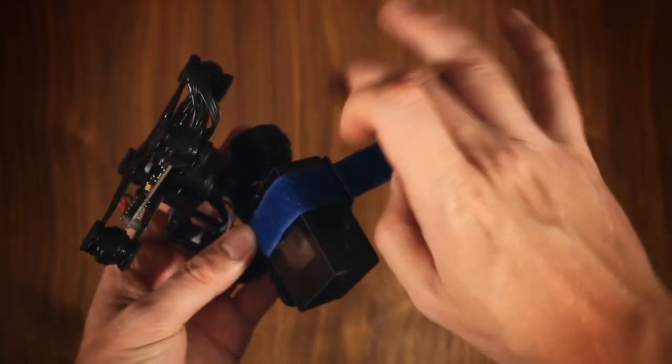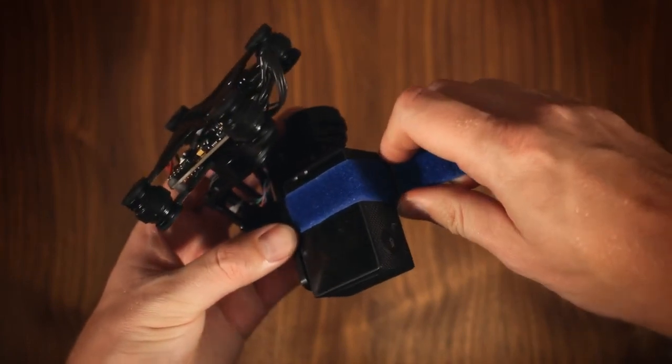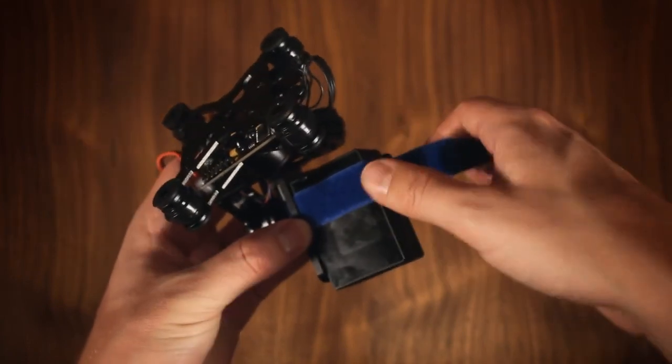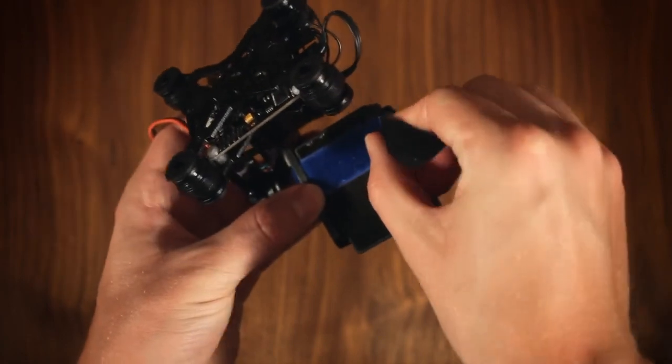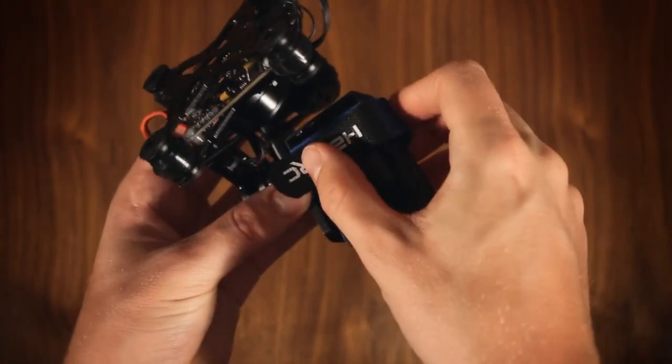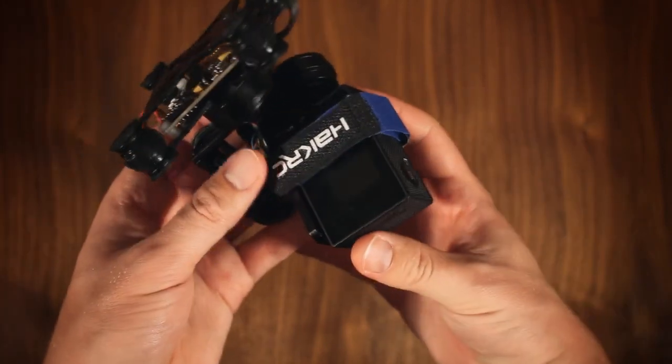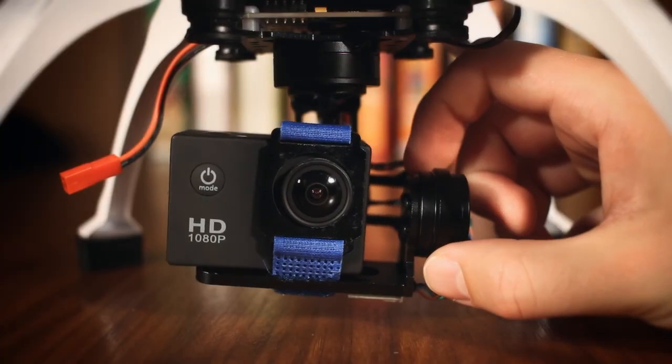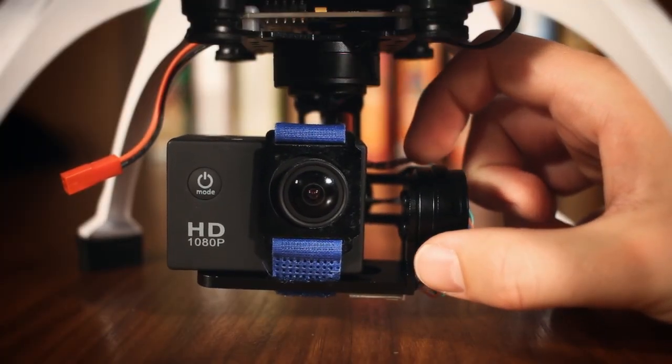At this point I also mounted my camera to the gimbal – an SJCAM SJ4000. As an obvious GoPro clone, it has almost the exact same dimensions as one, which is good since it meant I could use the strap that came with the gimbal. Remember to balance the gimbal for best possible results.